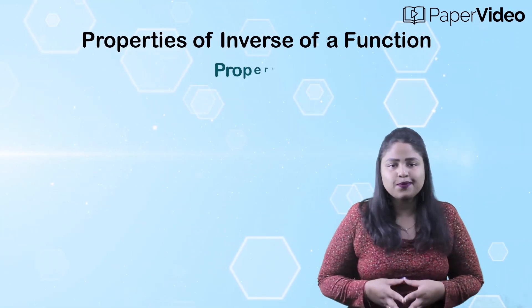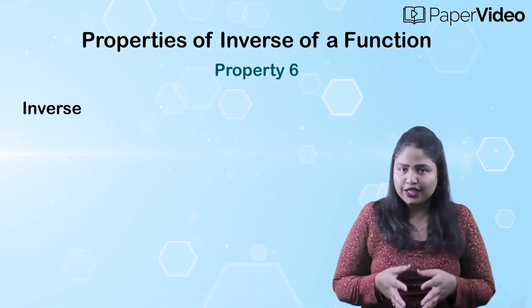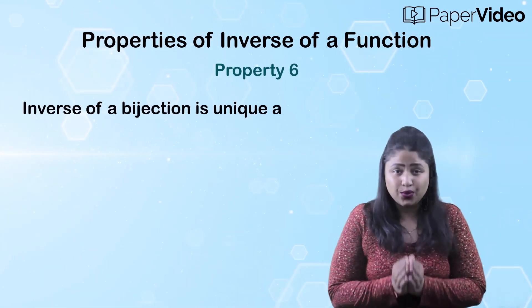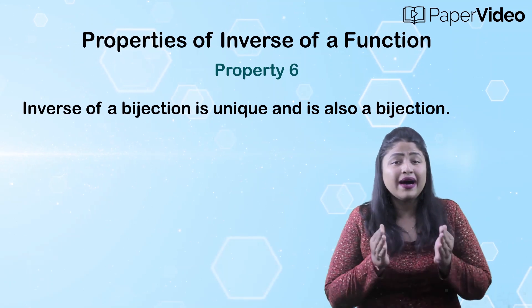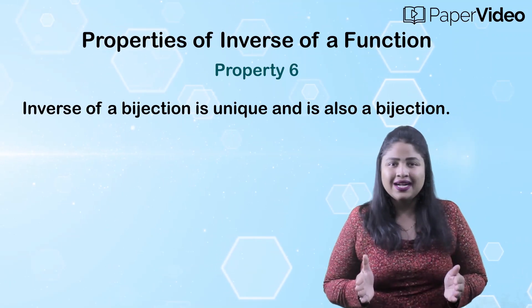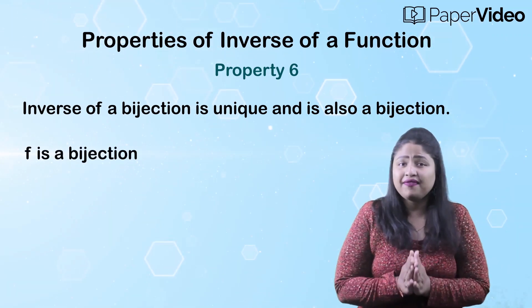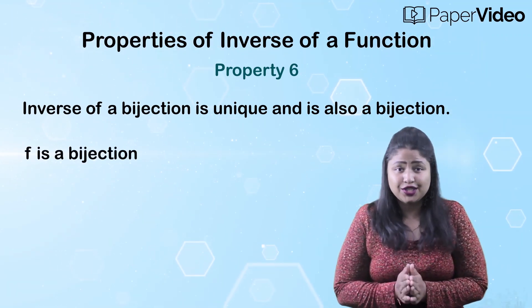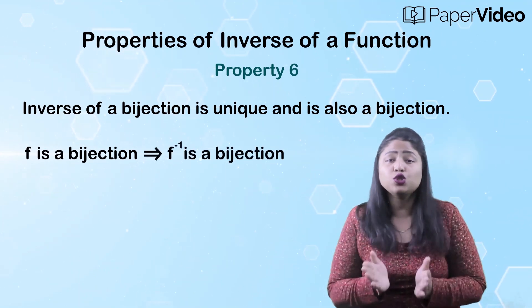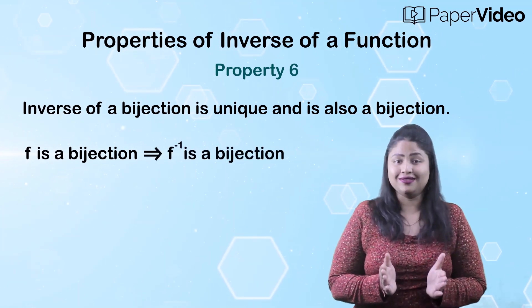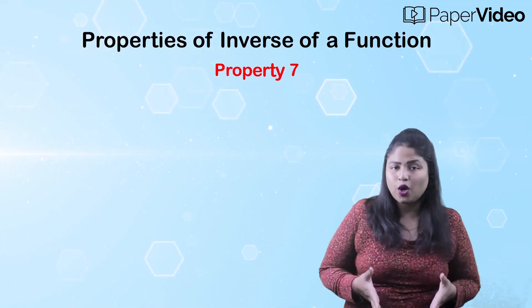According to the sixth property, the inverse of a bijection is unique and is also a bijection. This means that if f is a bijection, then f inverse will also be a bijection.